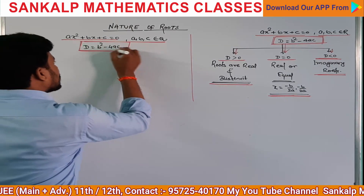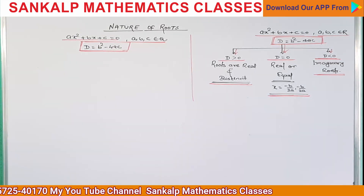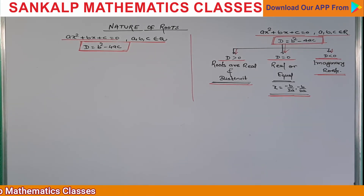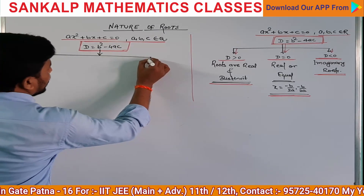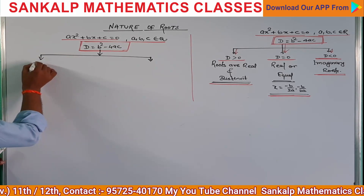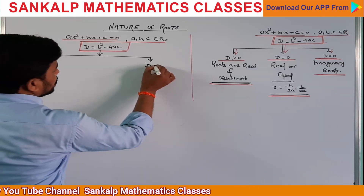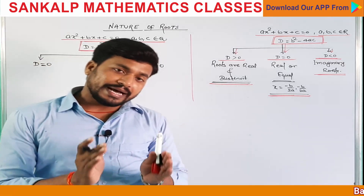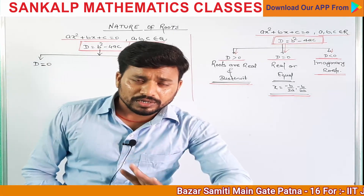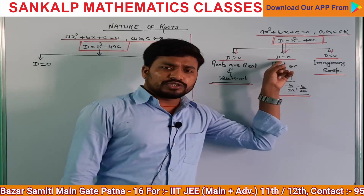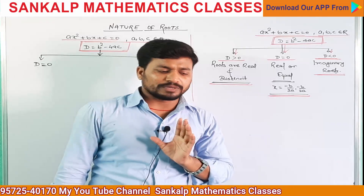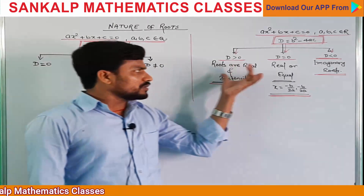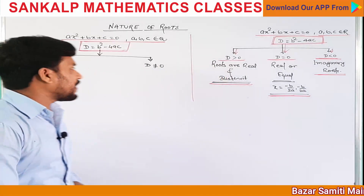यहाँ पर D को मैंने दो approach किया है। एक approach में D = 0, और दूसरी में D ≠ 0। या तो D की value 0 होगी, या 0 नहीं होगी। 0 नहीं हुआ तो positive या negative होगा। D की value 0 नहीं हुआ तो positive होगा और negative होगा।